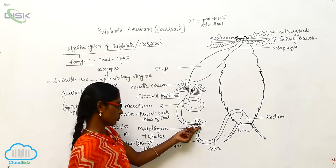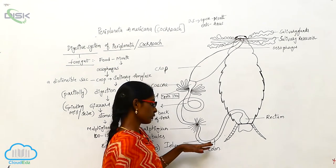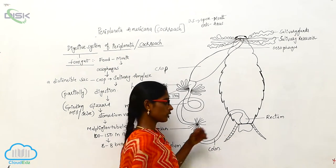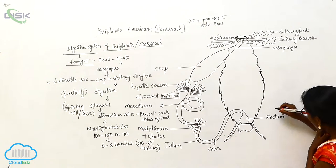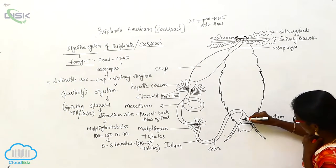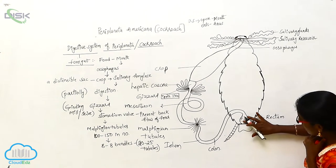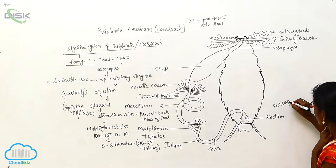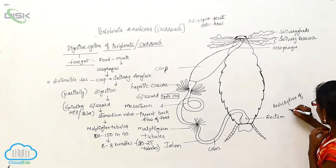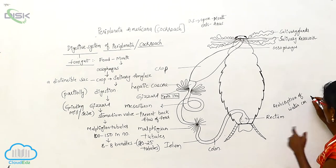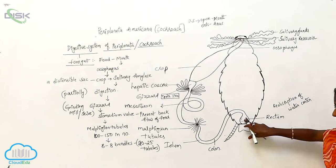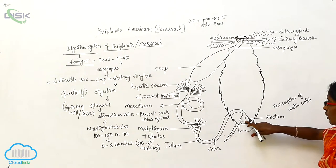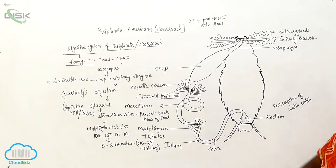From the Malpighian tubules the material passes to the ileum and colon. From the colon it goes to the rectum. The rectum has papillae-like structures, which are used for the reabsorption of water content. After reabsorption, the undigested or unabsorbed food material is eliminated by the anus.